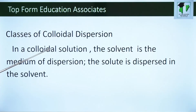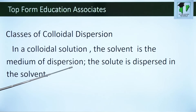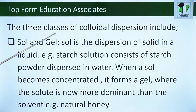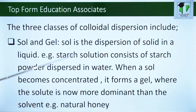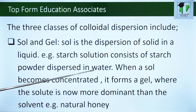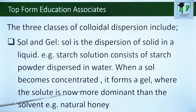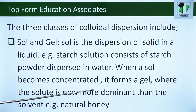Classes of colloidal dispersion. In a colloidal solution, the solvent is the medium of dispersion and the solute is dispersed in the solvent. The three classes of colloidal dispersions include, one, sol and gel. Sol is the dispersion of solid in a liquid. For example, a starch solution consists of starch powder dispersed in water. When a sol becomes concentrated, it forms a gel, where the solute is now more dominant than the solvent. Example: natural honey.